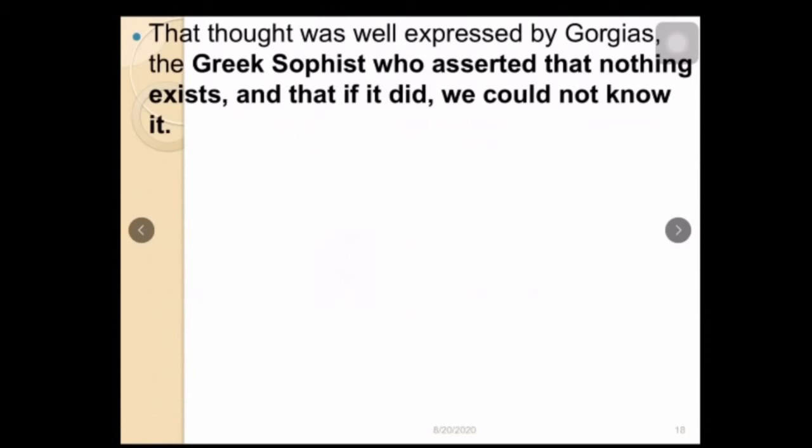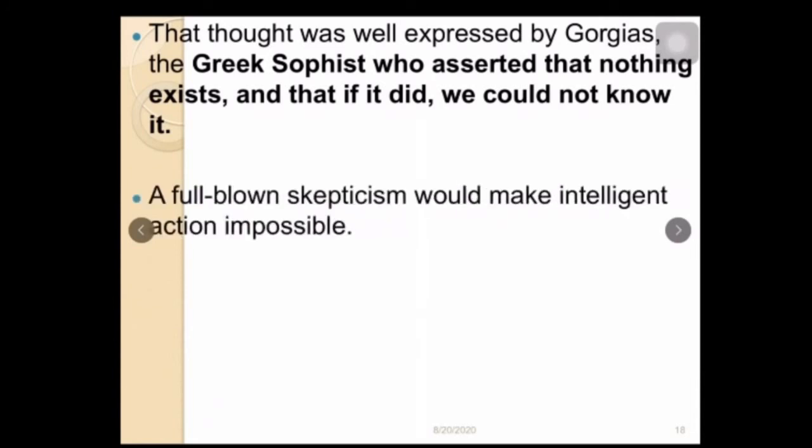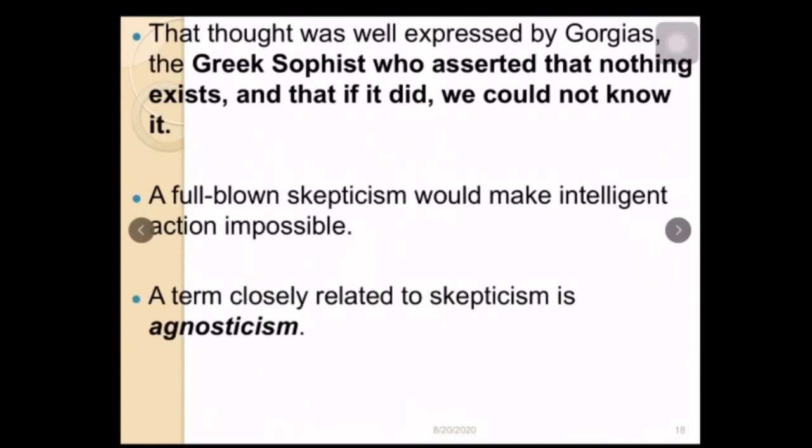A well-experienced philosopher we can mention, Gorgias, the Greek philosopher. He asserted, he advocated that nothing exists. Nothing exists and that if it did, we could not know it. So a full-blown skepticism would make intelligent actions impossible according to skepticism. If intelligent actions, intelligent knowledge are nothing and they are impossible according to skepticisms.